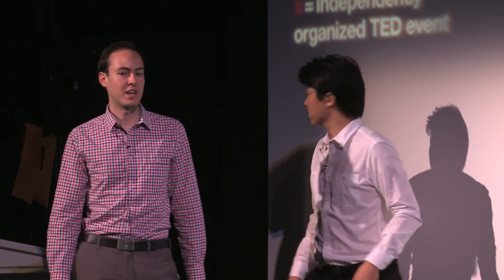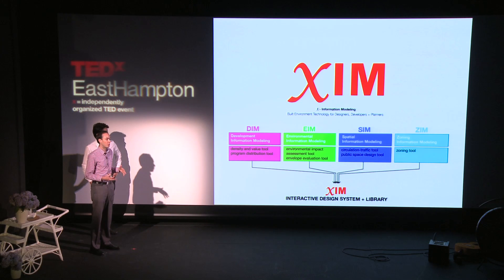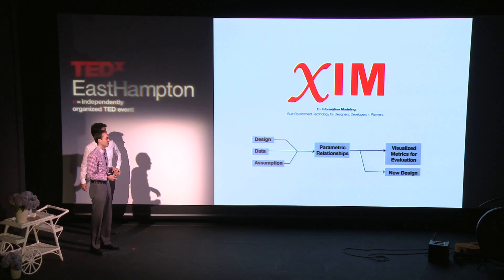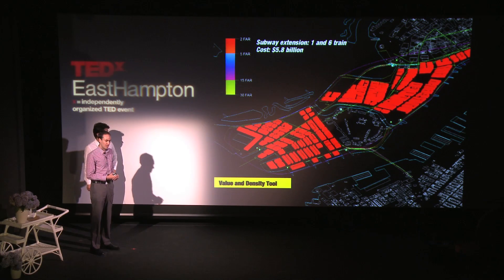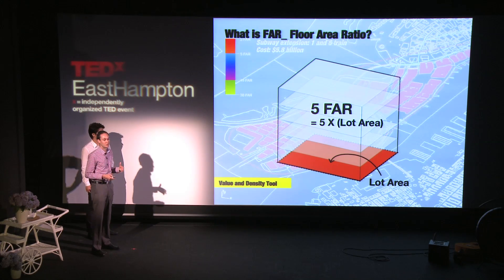To test, iterate, and evaluate various speculations about the future, we've created a methodology we call X-Information Modeling, or XIM, where the X is a variable for any of the diverse, often competing objectives for the growth of the city — development concerns, environmental concerns, and zoning code. We take those objectives and put them into a 3D model that allows us to visualize and evaluate different speculations about the future. For LoLo, the first tool we use is a value and density tool, pairing real estate development analysis with spatial analysis of density. In New York, spatial density is referred to as FAR — floor area ratio — meaning given your lot area you can build that many times over.